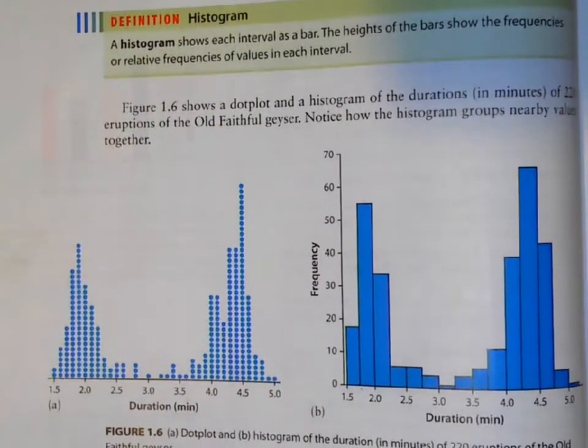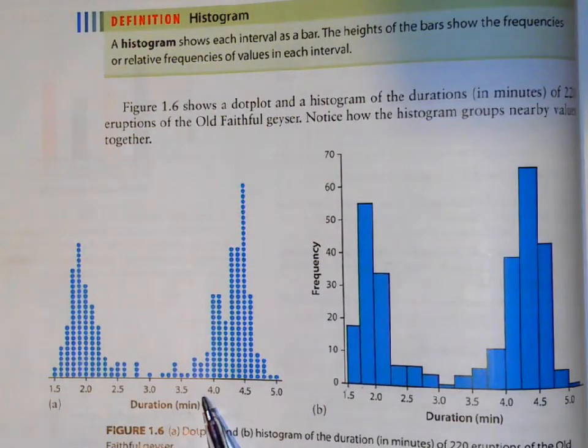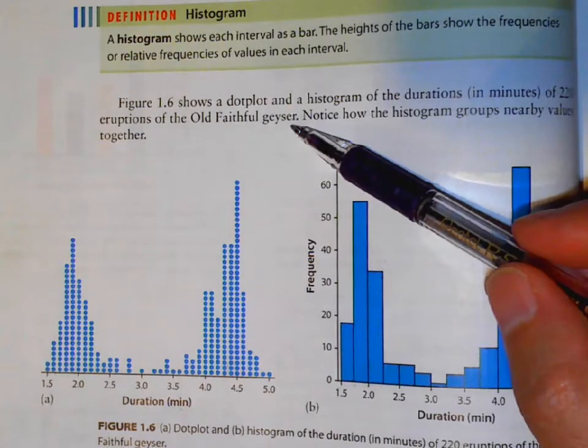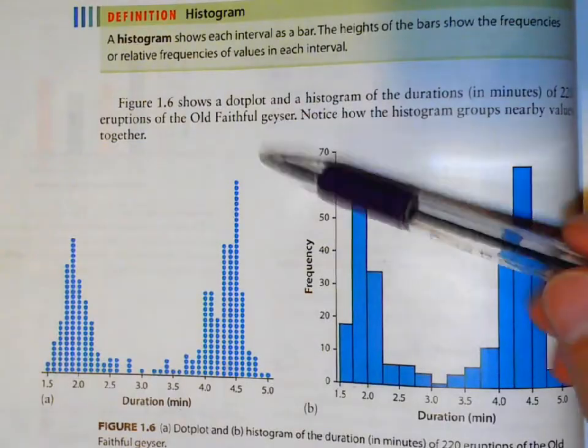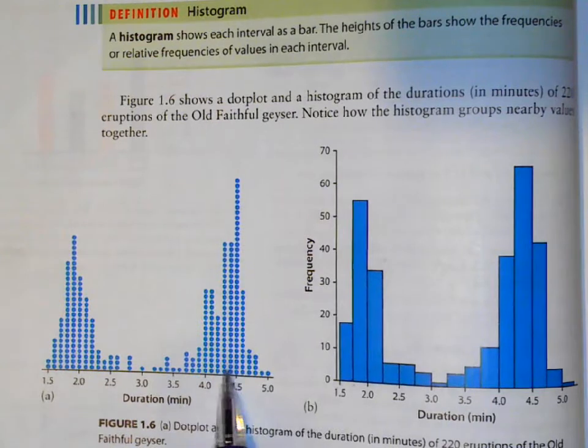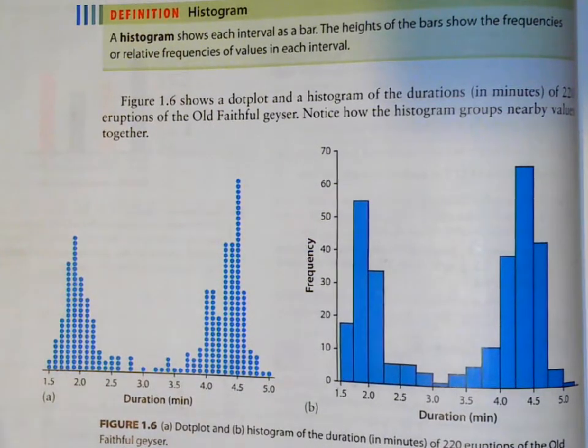This is a dot plot for Old Faithful. Old Faithful is a geyser in Yellowstone National Park. A geyser, if you don't know, shoots water out of the ground. This happens, it's faithful because it happens right around the same amount of time every time.